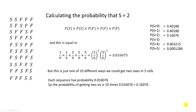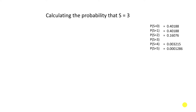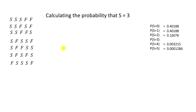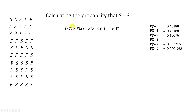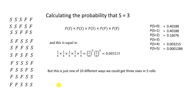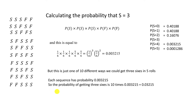That only leaves us with P(S=3). To calculate that is similar to P(S=2). This time, we've got to think about how many ways we can get exactly two failures in five rolls — and again, there are 10 ways of doing that. The first of those has probability: success, success, success, failure, failure — which is equal to this. And because all 10 have exactly that probability, we know that the probability of getting three sixes in five rolls equals this value. So we can complete that entry.